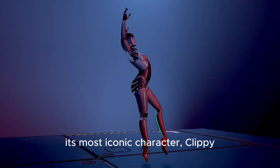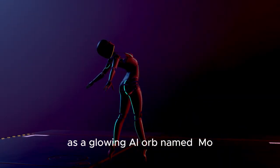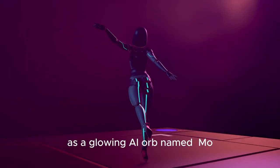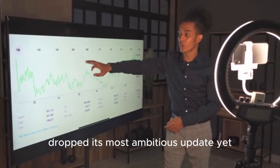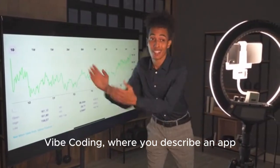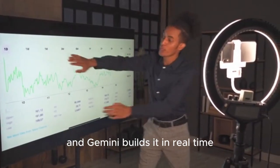Microsoft resurrected its most iconic character, Clippy, as a glowing AI orb named M.O., and Google dropped its most ambitious update yet, Vibe Coding, where you describe an app and Gemini builds it in real time.